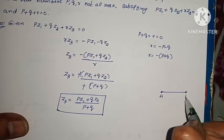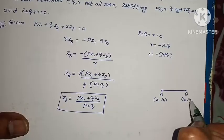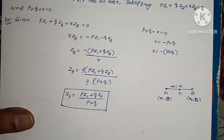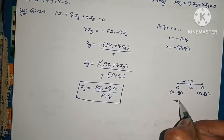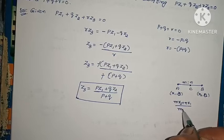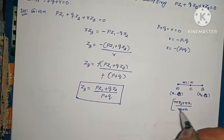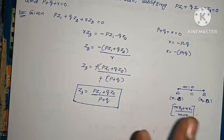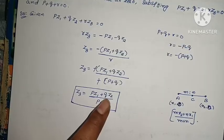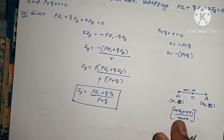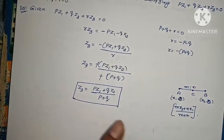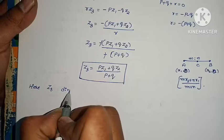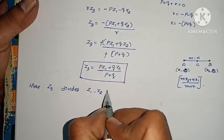We have points A and B with coordinates x1, y1 and x2, y2. Point C divides AB in the ratio M to N. The section formula gives the x-coordinate as (Mx2 + Nx1) / (M + N). This is the section formula from 10th standard coordinate geometry.